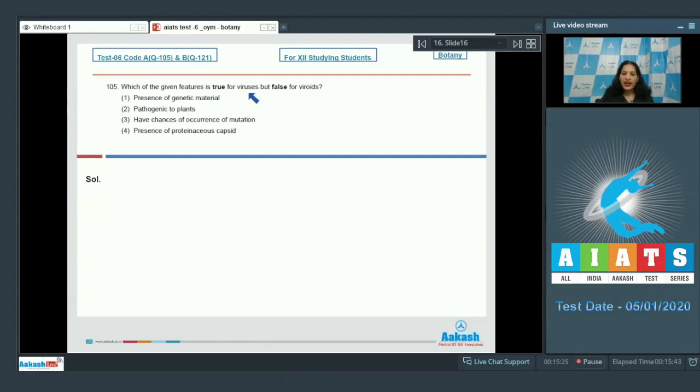Let's move to the next question. Question number 105: Which of the given features is true for viruses but false for viroids? I can write here that for viruses and for viroids. Option number one: Presence of genetic material. In viruses as well as viroids, both have genetic material. Viroids are infectious RNA particles, so they have RNA, and in viruses it can be either RNA or DNA.